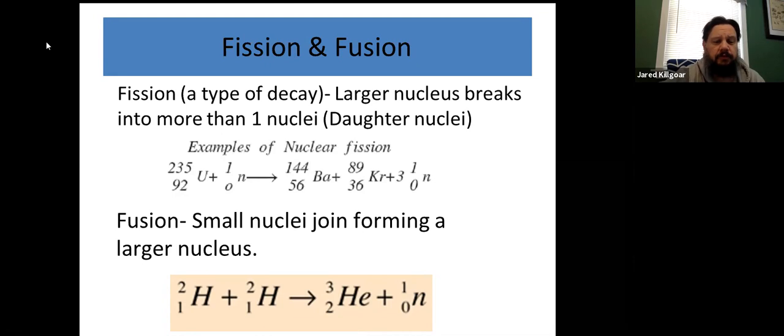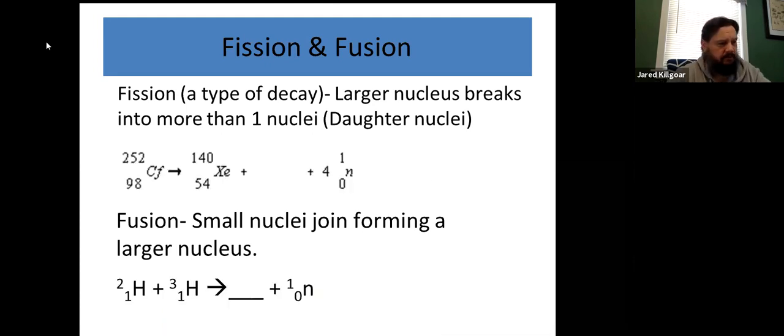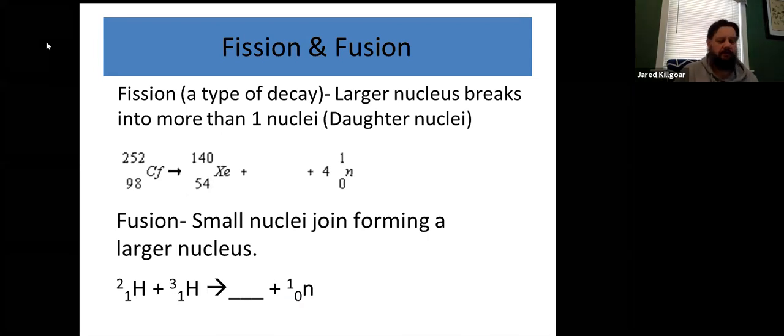Here's an example of a fusion reaction, where you have smaller nuclei joining together to form a larger one, where you have two deuteriums forming a helium-3 plus a neutron. So you have two small nuclei come together to form a bigger one. Okay, so let's go over a couple of style of problems to show you guys how to do these. I'm going to write this on the iPad.